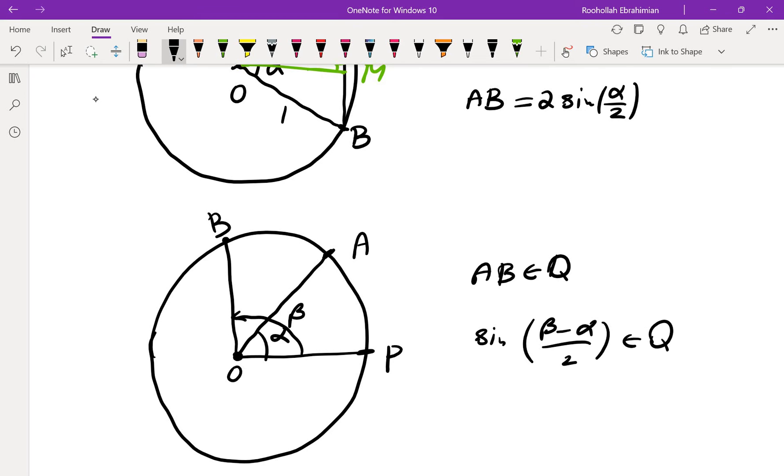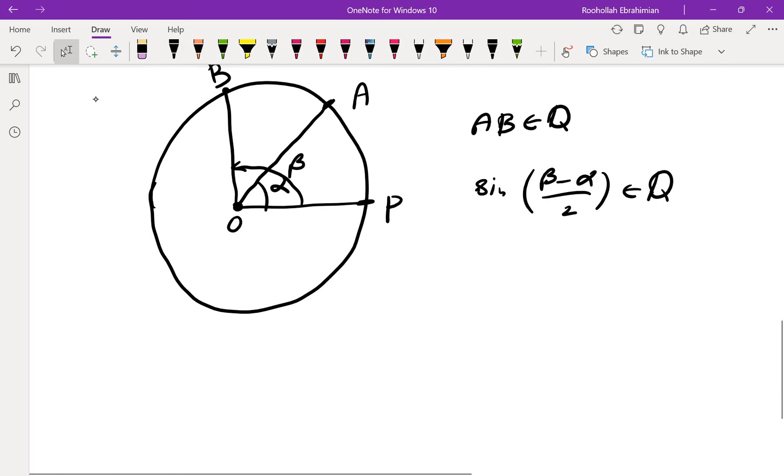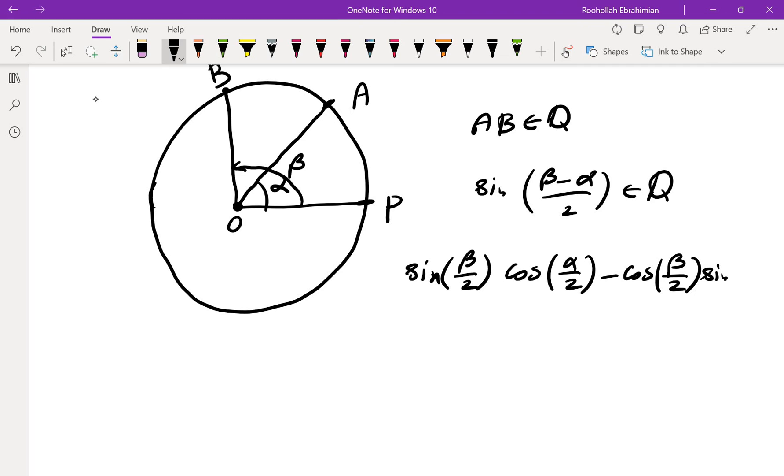So in order for that to be rational, if you expand this you would get sine of beta over 2 cosine of alpha over 2 minus cosine of beta over 2 sine of alpha over 2.